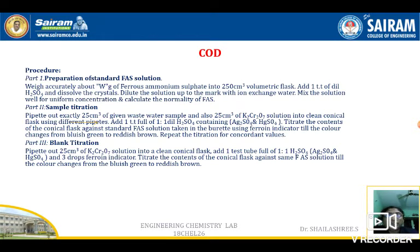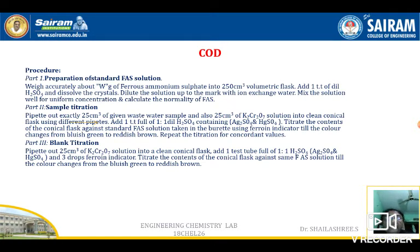You don't know exactly how much potassium dichromate is required, so a known volume is added and the unreacted potassium dichromate is calculated by blank titration. First, pipette out 25 ml wastewater and 25 ml of potassium dichromate. Add one test tube of dilute H2SO4 containing silver sulfate and mercuric sulfate. Silver sulfate acts as a catalyst in oxidizing some organic compounds, and mercuric sulfate binds the chloride ions as mercuric chloride.